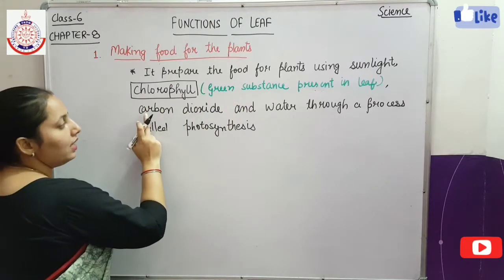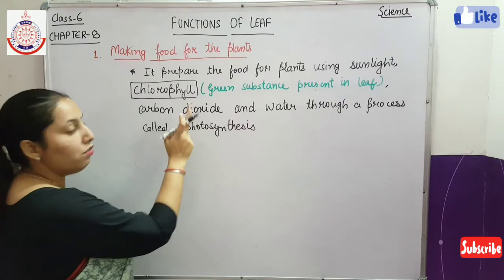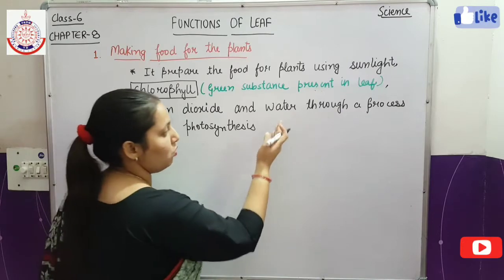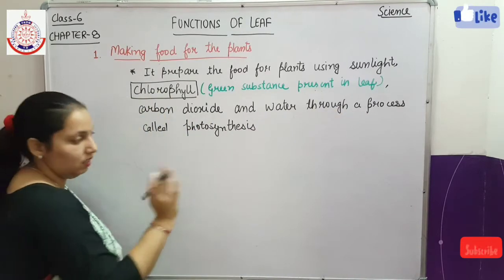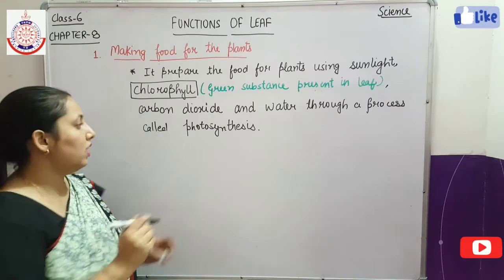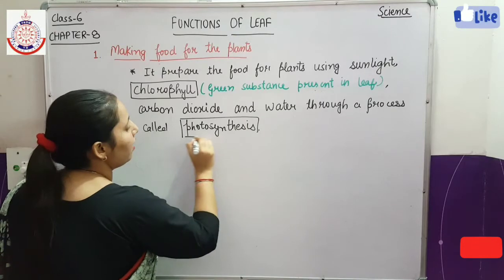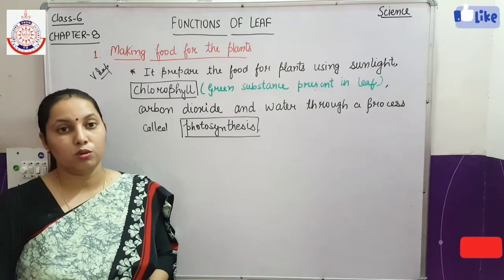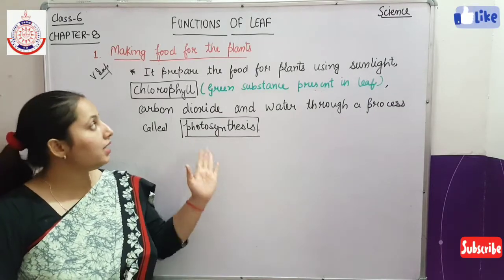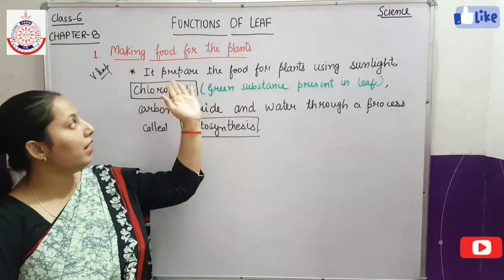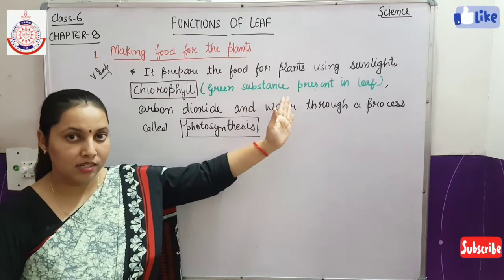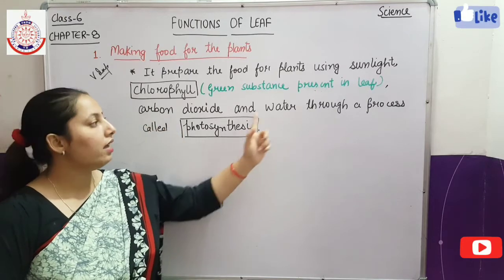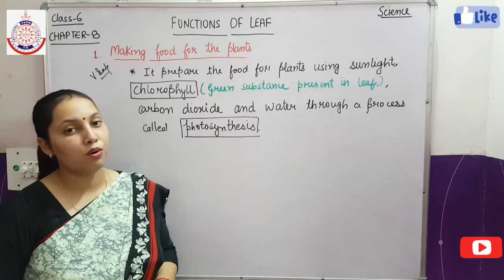The leaf also uses carbon dioxide from air and water from the soil through the roots, through a process called photosynthesis. What is photosynthesis? It is the process in which the leaf prepares food for the plants by using sunlight, chlorophyll, carbon dioxide, and water. This process is called photosynthesis.